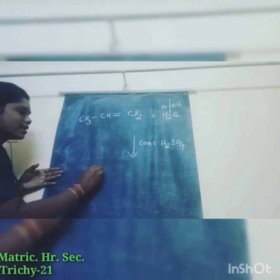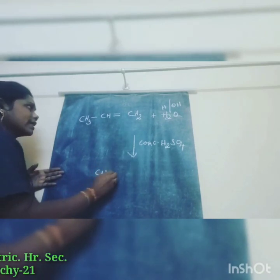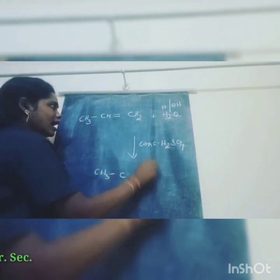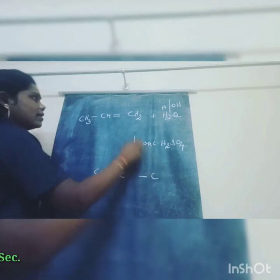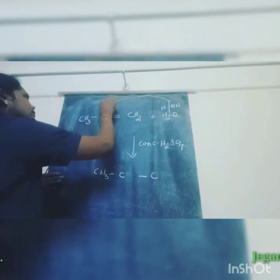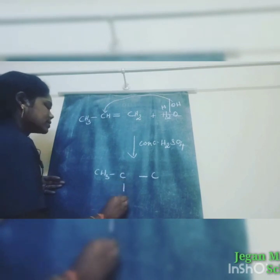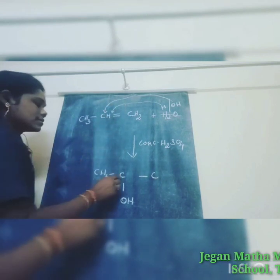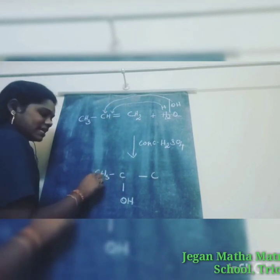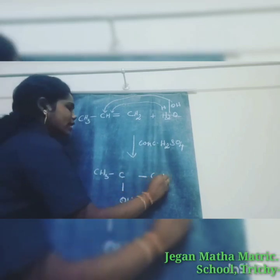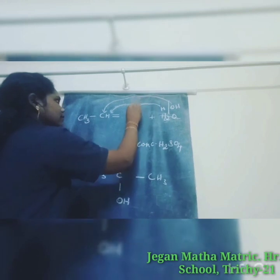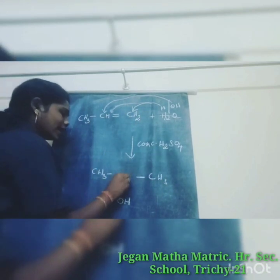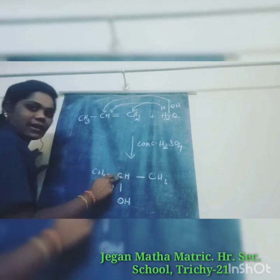Writing the product: CH3–C(single bond)–C(single bond). OH is attacked at the second carbon, and hydrogen combines at the first carbon. So the structure is CH3–CHOH–CH3.